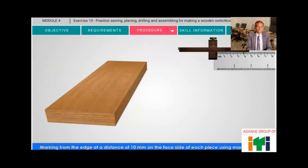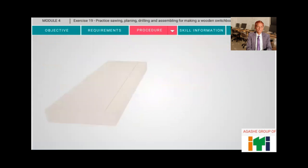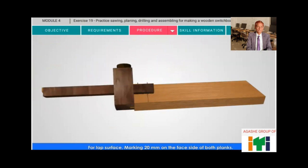Marking from the edge at a distance of 10 mm on the face side of each piece using marking gauge. For lap surface, marking 20 mm on the face side of both planks.